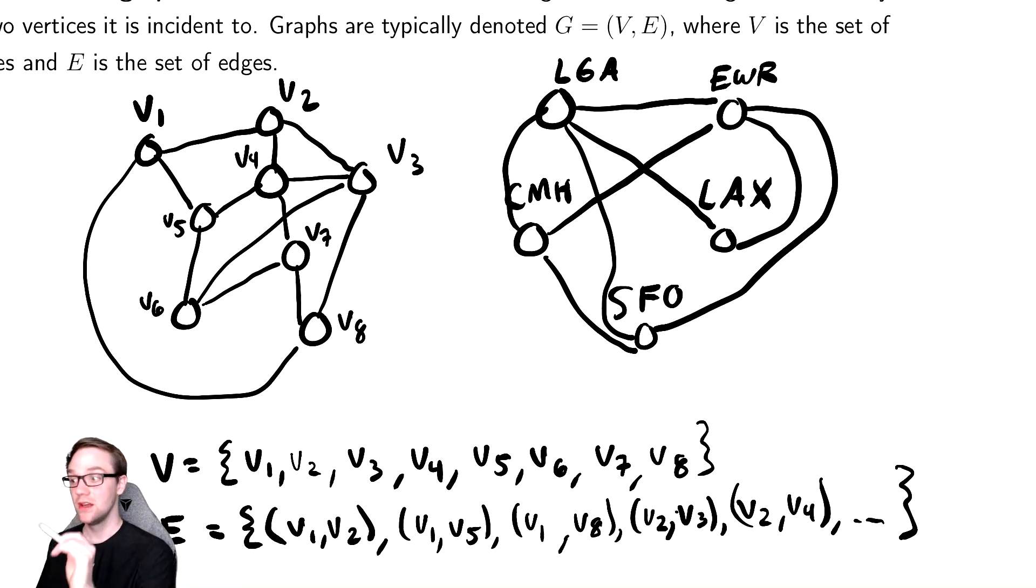Similarly, an edge is incident on a vertex if it is one of the endpoints. So this edge (V1, V2) is incident on V1, and is incident on V2. So there's adjacent, which refers to two vertices, and there's incident, which refers to an edge and a vertex.